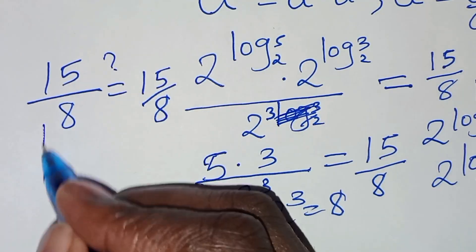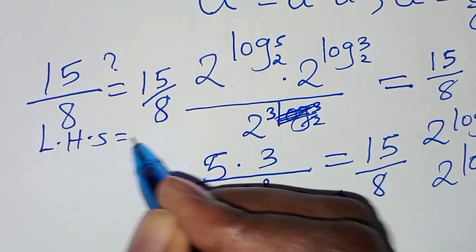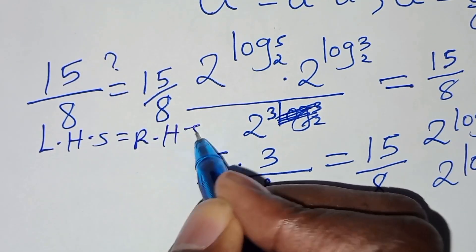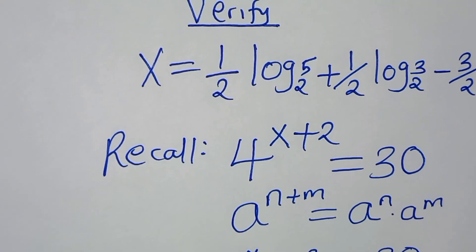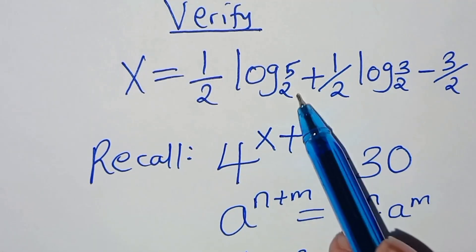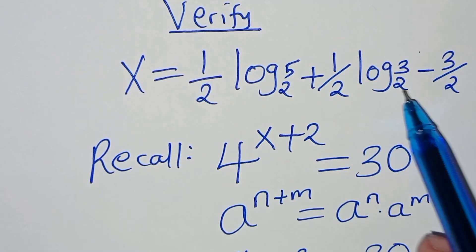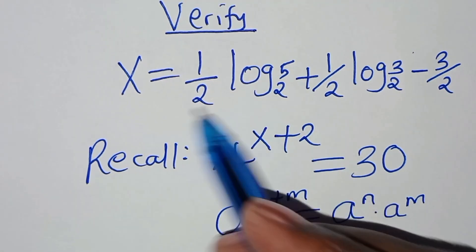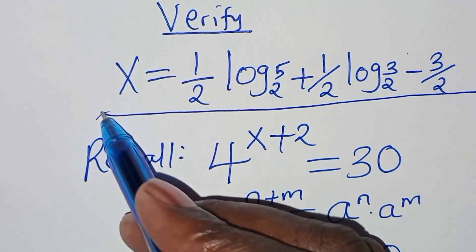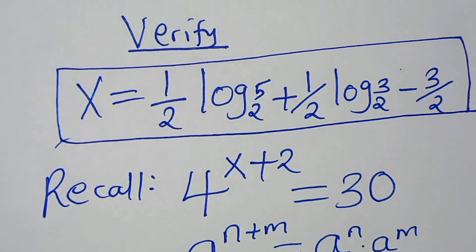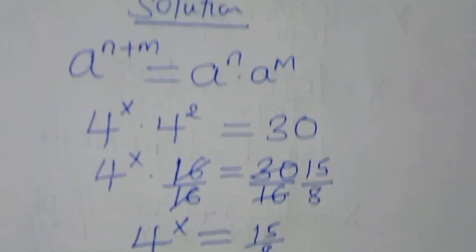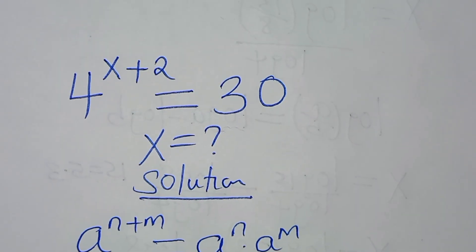So it's true that the left-hand side is equal to the right-hand side, and this implies that the value of x, which is one-half log 5 to base 2, plus one-half log 3 to base 2, subtract 3 over 2, satisfies the equation. If you found this helpful, like this video and subscribe.